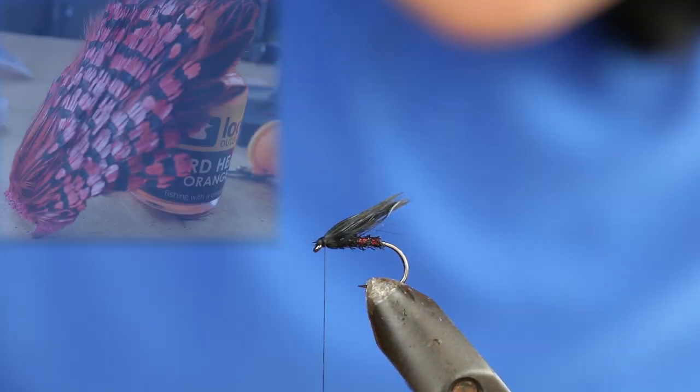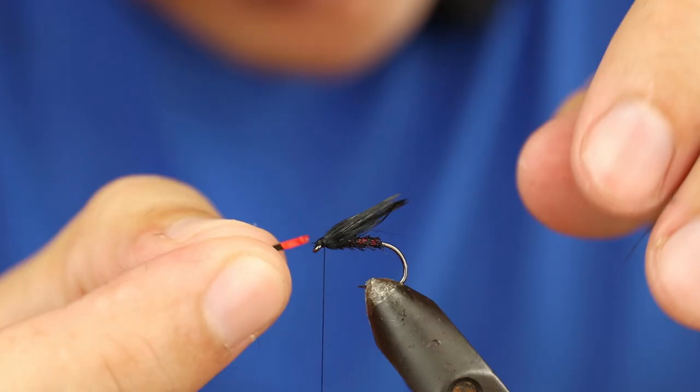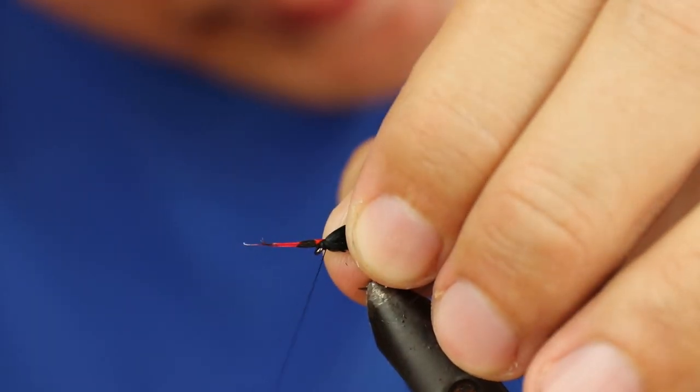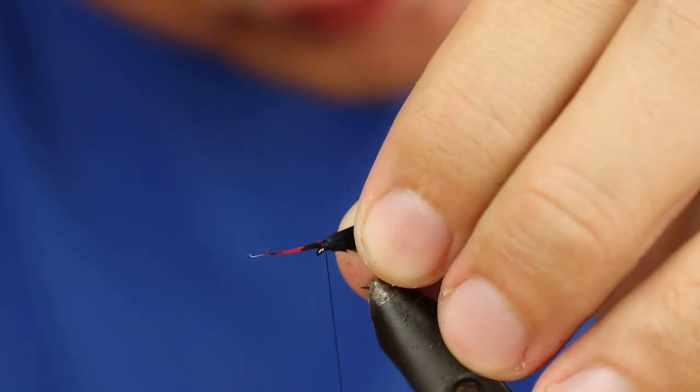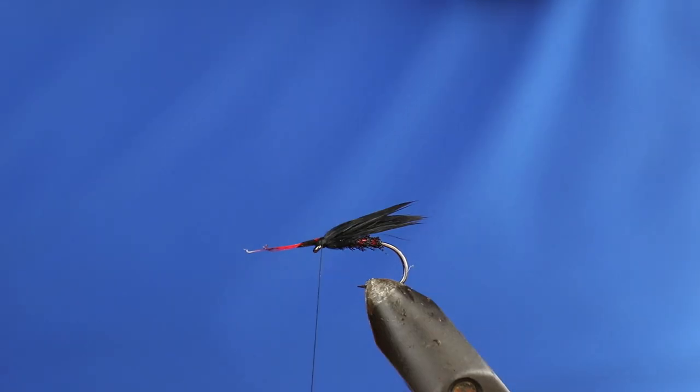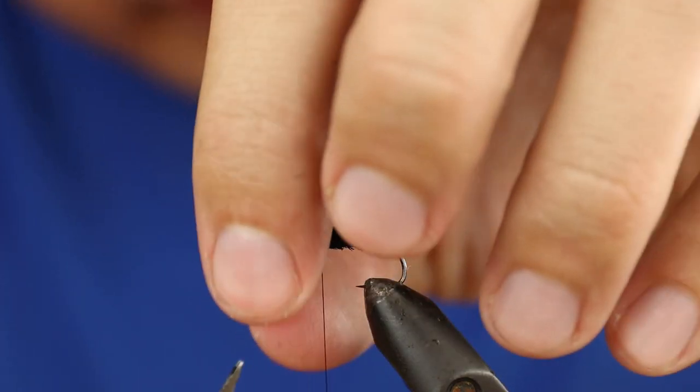And the next job is the jungle cock cheeks. You can either use red jungle cock, or a good alternative is goose biots.